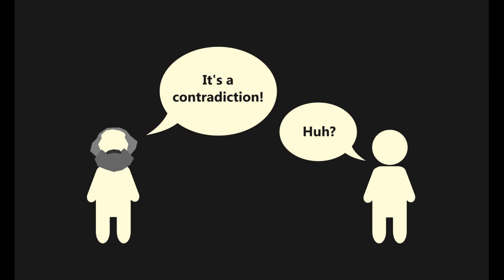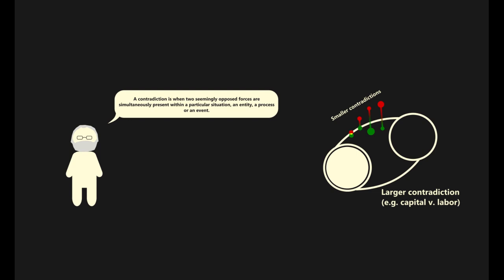Let's first attempt to determine what we mean when we use the term contradiction. For David Harvey, a contradiction is when two seemingly opposed forces are simultaneously present within a particular situation, an entity, a process, or an event.